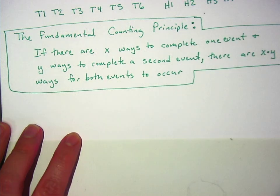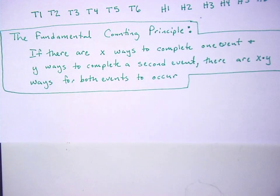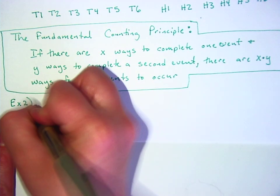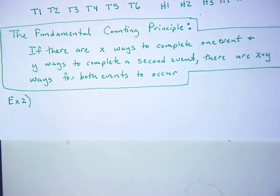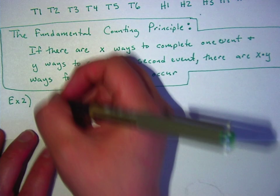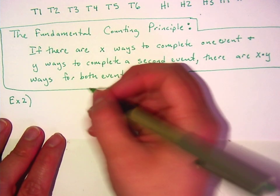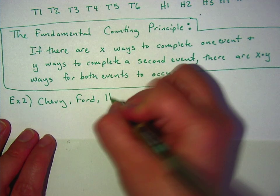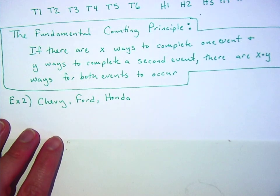Now, a tree diagram will always work. The problem is that sometimes it is not worth it to make a tree diagram, for example. Let's say that you're buying a car. Give me three manufacturers that you might want to choose from. Chevy, Ford, Honda. These are your three choices. And then what kind of car do you want to get?